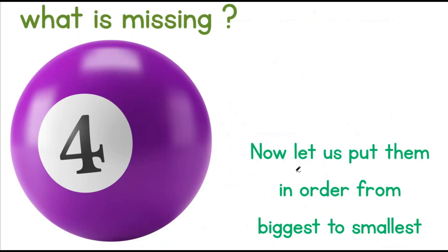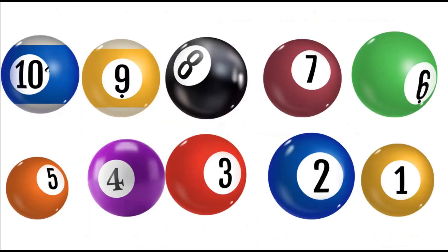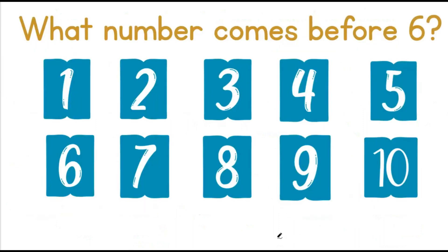Now, let us put them in order from biggest to smallest. 10, 9, 8, 7, 6, 5, 4, 3, 2, 1. What number comes before 6?